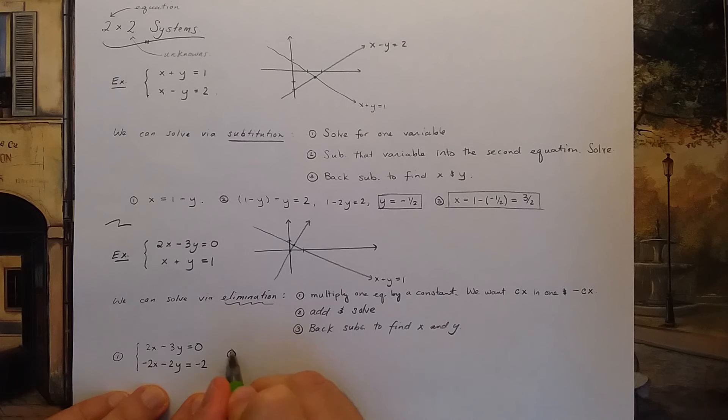Now, step two says add the two equations together. So if I add these two equations together, I'll get 2x minus 2x. Those will cancel. I'll have negative 3y minus 2y. So negative 5y should equal 0 plus negative 2. So in other words, y is equal to 2 fifths. So now I know y.